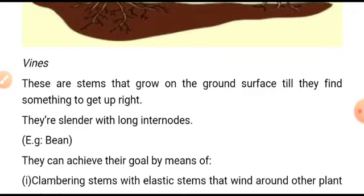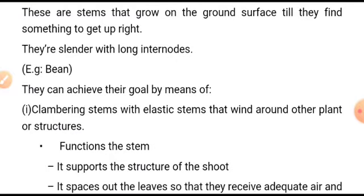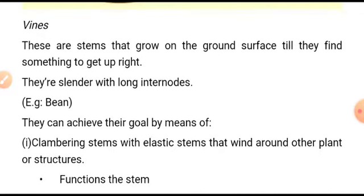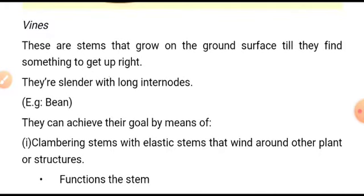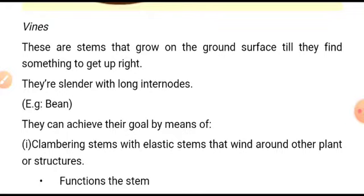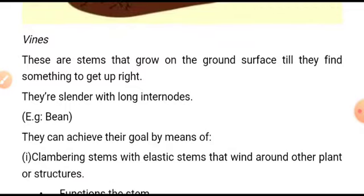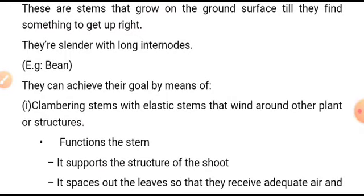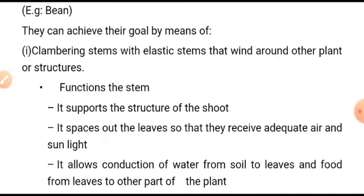Vines are stems that grow on the ground surface until they find something to get upright; they are slender with longer internodes. For instance, in beans — the stem of beans is soft and grows on the ground surface until it finds something to get upright, such as a small stick to climb on. This system of climbing stems is called vines, and a good example is the bean plant.